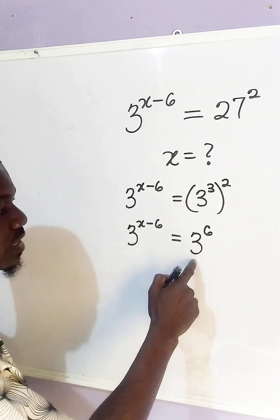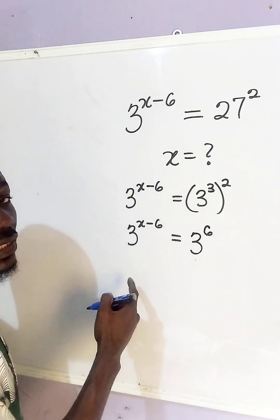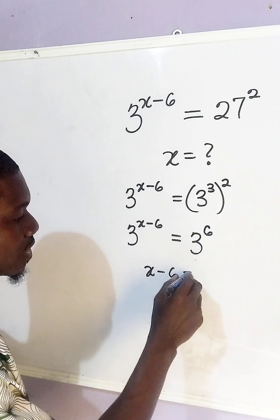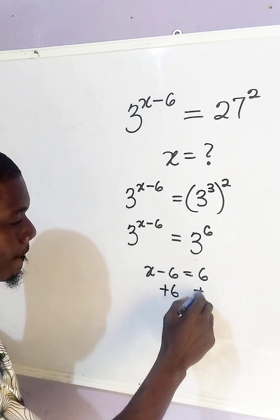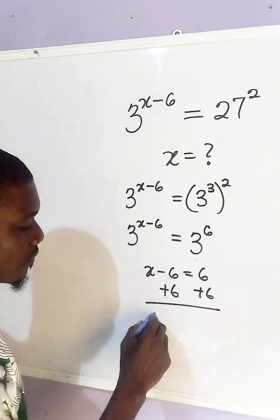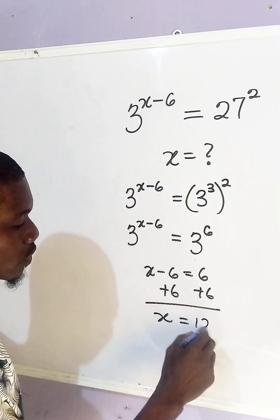Since we are having the same base, we can equate the exponents. So we have x minus 6 equals 6. Add 6 to both sides, we have that x equals 12.